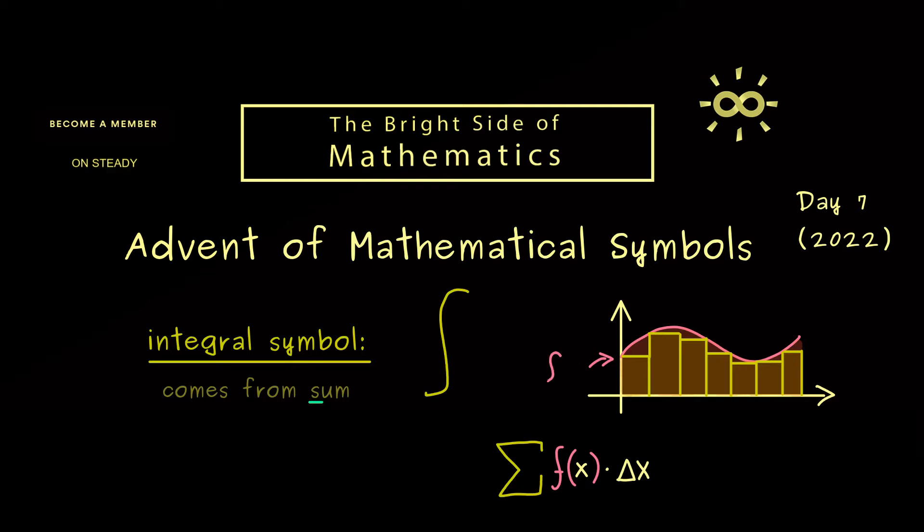So you see, this is not complicated at all. We just read the value of the function and the distance on the x axis, and then summing it up gives us the whole area.